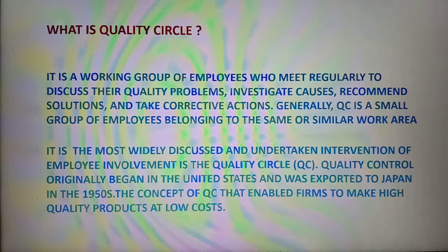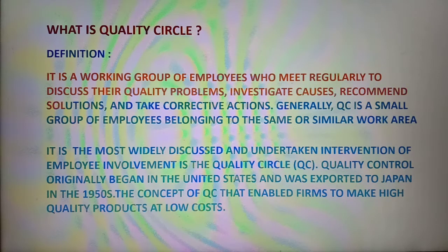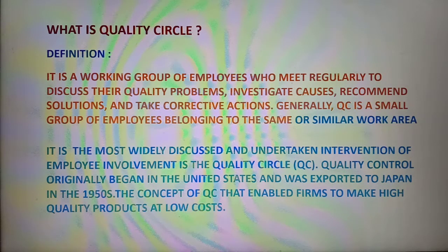What is Quality Circle? Definition: It is a working group of employees who meet regularly to discuss their quality problems, investigate causes, recommend solutions, and take corrective actions. Generally, Quality Circle is a small group of employees belonging to the same or similar work area.